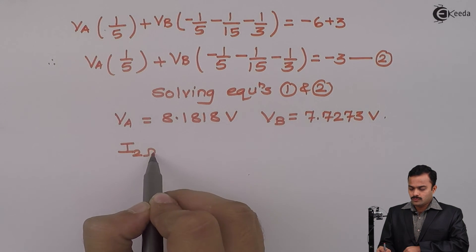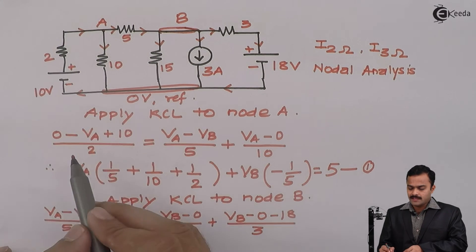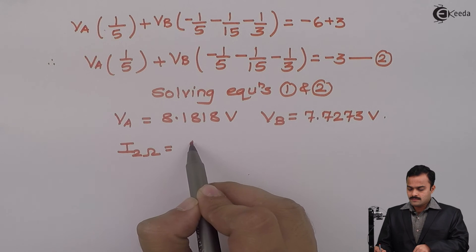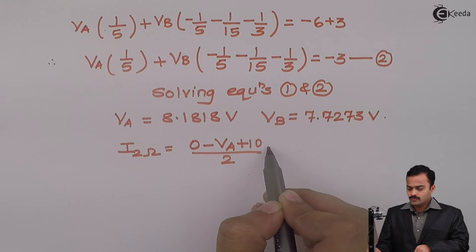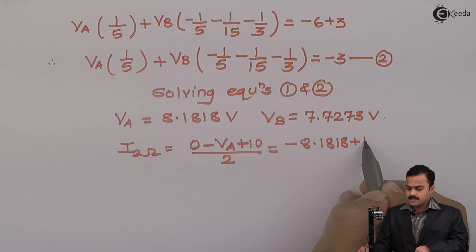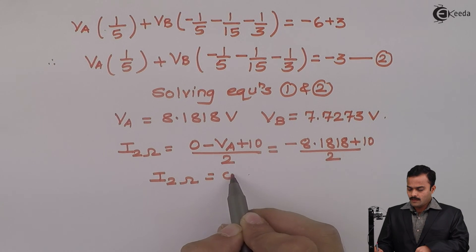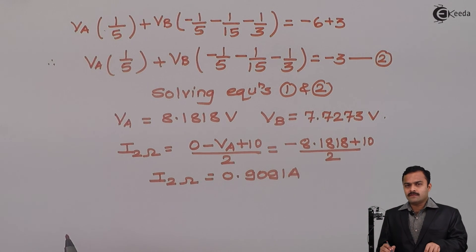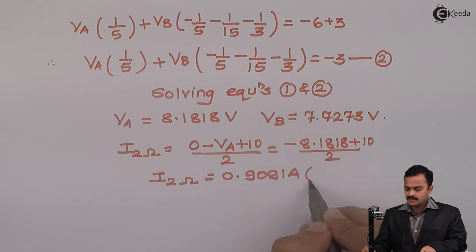Now the objective is to find the current flowing through the 2 ohm resistance. Going back to the original circuit, the equation we wrote was 0 minus V_A plus 10 divided by 2. Substituting the values: minus 8.1818 plus 10 divided by 2 gives a current of 0.9091 ampere. The positive answer confirms that the assumed current direction is correct, so the current through the 2 ohm resistor flows upward.